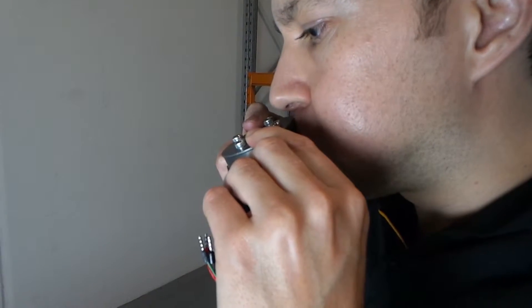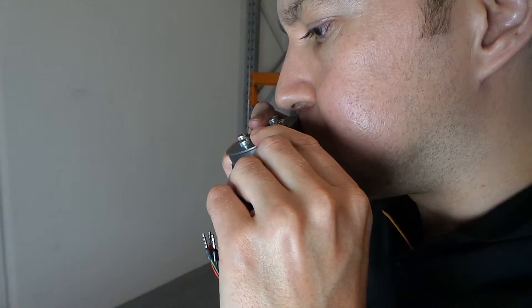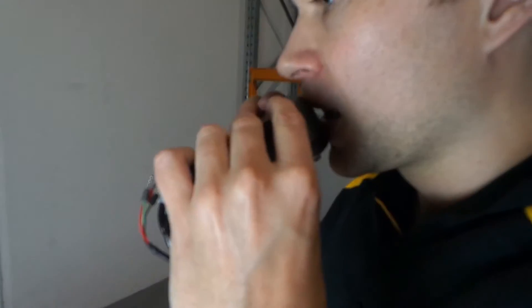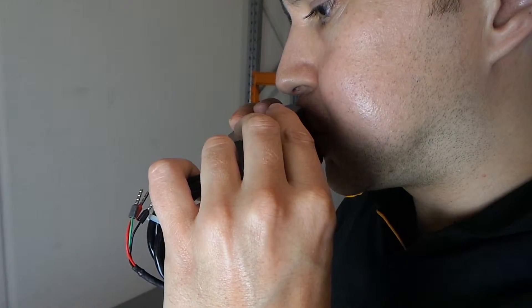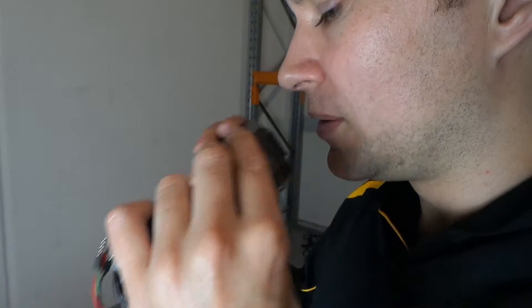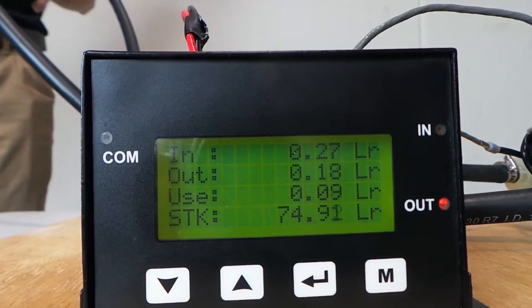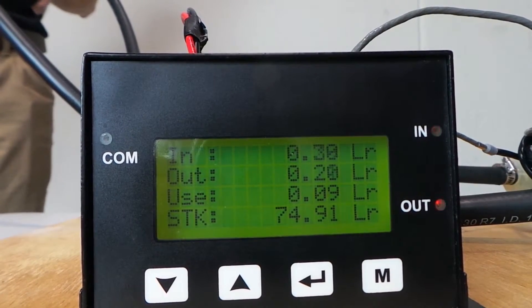The next step is to check if the pulse meter is blocked. To do this, blow through the pulse meter. You should hear the gears spinning. Do this again with the unit powered up and the counter should go up on the display.